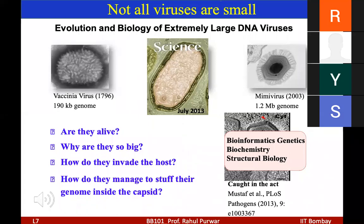In biology, we see a range and cannot define one particular number. Outside the host, viruses are inert particles, but once inside the host cell they use the host's enzymes and mechanisms to produce energy. Inside the host cell they are alive; outside they are inert.